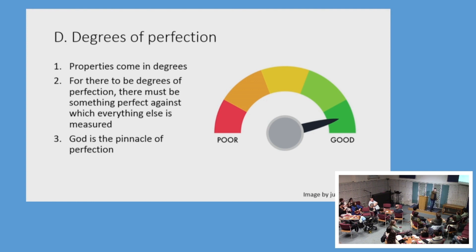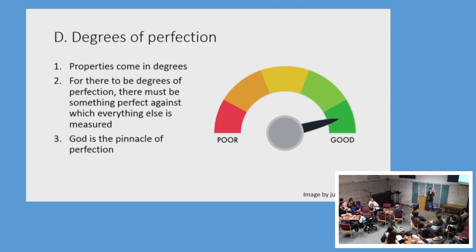Shawshank Redemption is factually the greatest movie of all time — it says so on IMDb. We have this idea of scales where we rank and rate things. But how do we know we're going in the right direction? How do we know what it means to be good, better, best — or bad, worse, worst — especially in terms of morality?